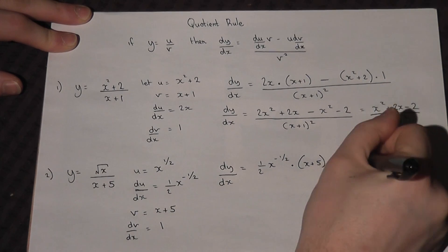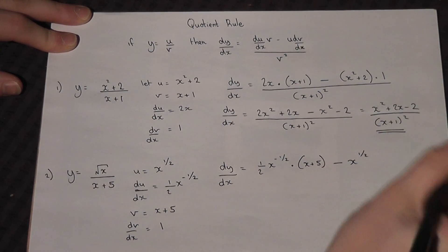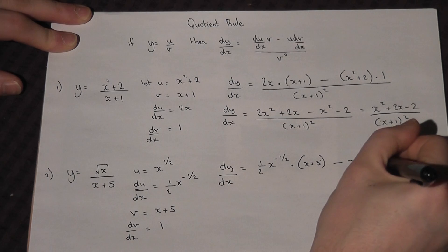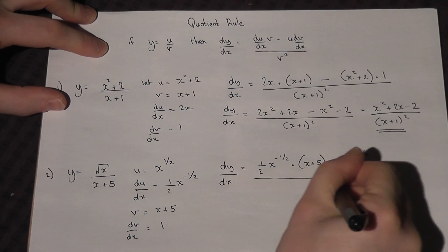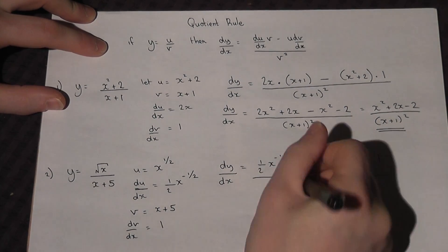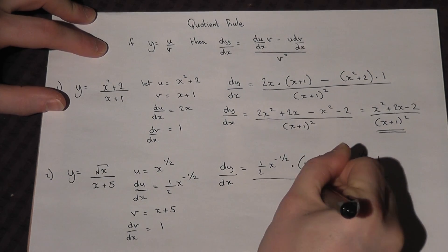Take away u, which is x to the half, times by dv by dx, which is just 1. All over v squared, which is x plus 5 squared.